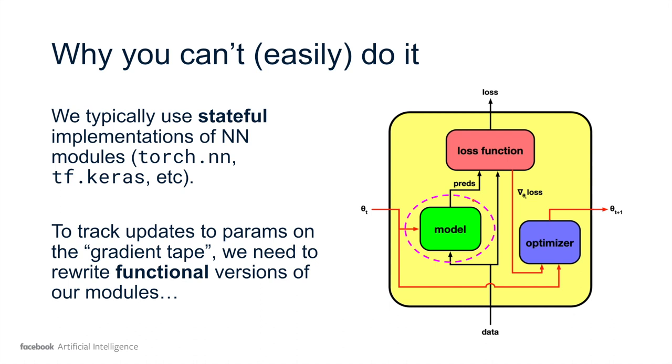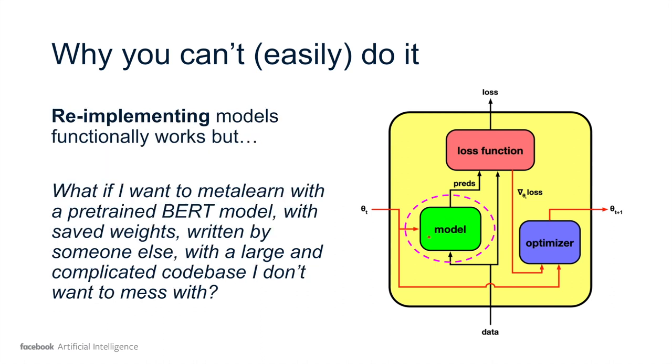The modules encapsulate the current state of their parameters and typically these will be written over in place by the optimizers, meaning there's no explicit tracking of the history of the model parameters as the training step is unrolled over time. To track updates to parameters on the gradient tape or an implicit or explicit backward graph, what's typically needed is to rewrite your model in a functional or stateless style that takes as additional input the current parameters, in order to track the history of those parameters explicitly in your backward pass.